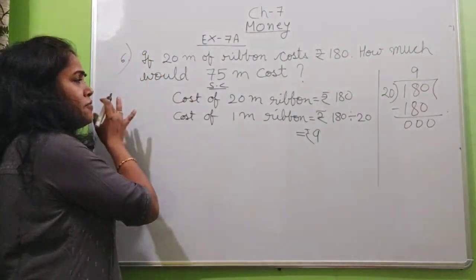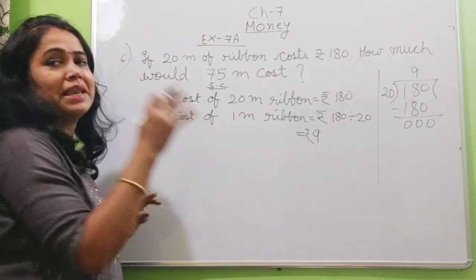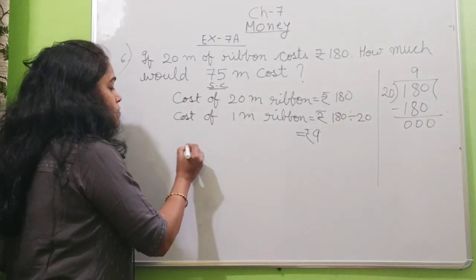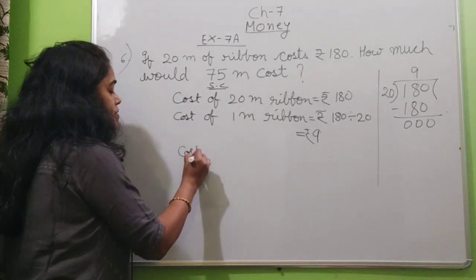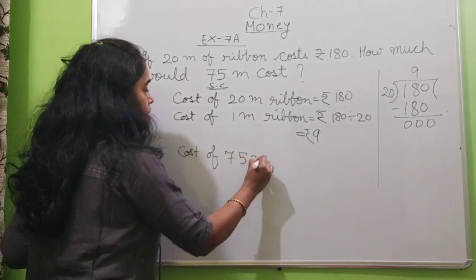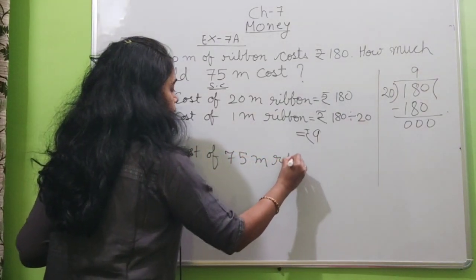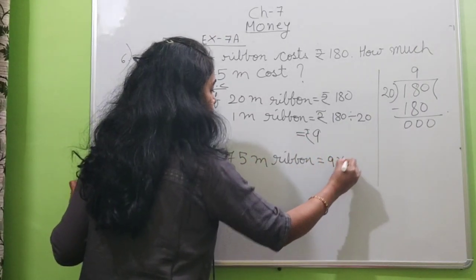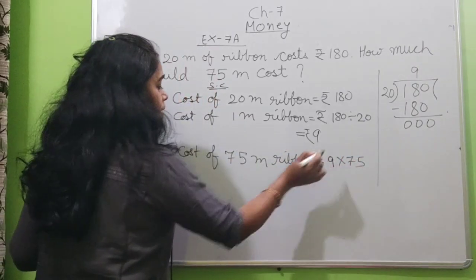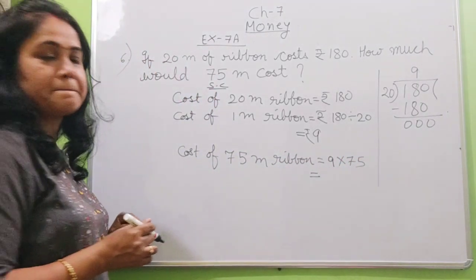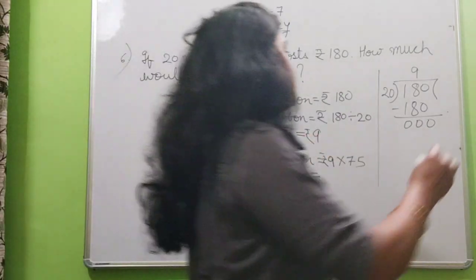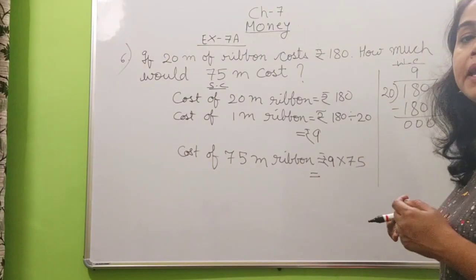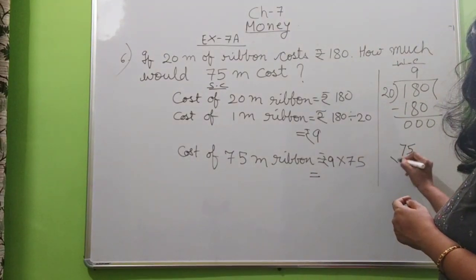So here in the question 75 meter cost they want. So we will write cost of 75 meter ribbon is equal to, 1 meter is 9. So 75 will be 9 into 75. Now you multiply. Here in the rough or working space, I will multiply. It is working column. I will multiply here. 75 multiply by 9.